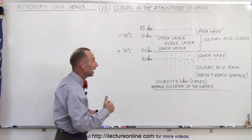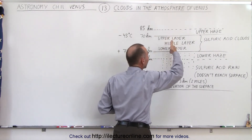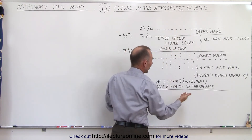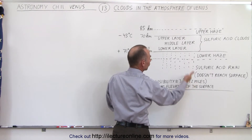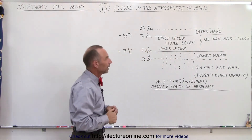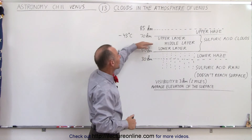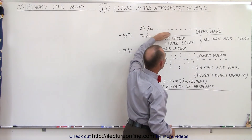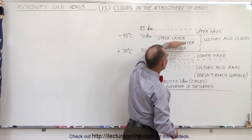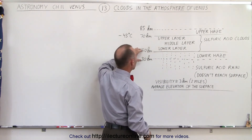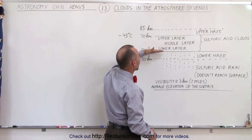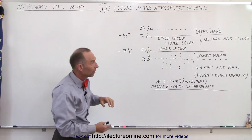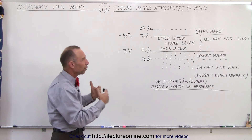It's a very thick layer, and visible light cannot make it through in any significant quantity, so we're not able to take pictures of the surface because of this thick cloud layer. Above the cloud layer there's a region of about 15 kilometers — about 10 miles — that is very hazy, called the upper haze. And there's a region of about 20 kilometers below the bottom of the cloud layer which is also quite hazy, called the lower haze.